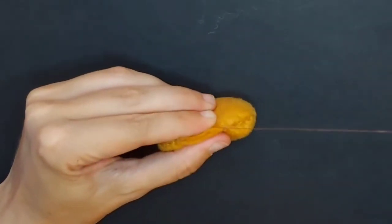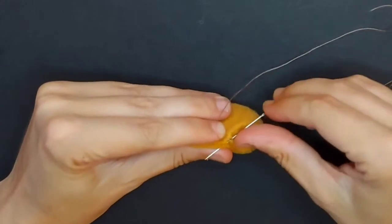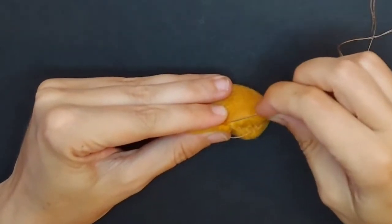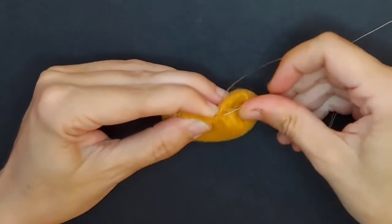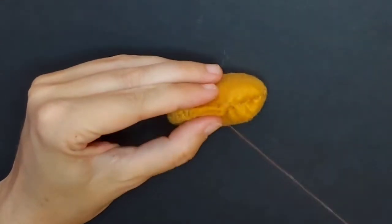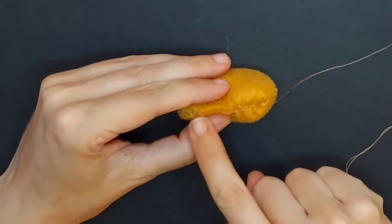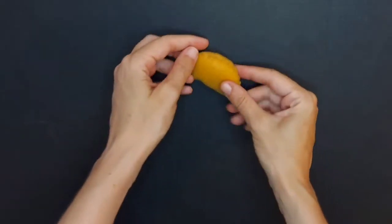I just did a zipper stitch to close this, which is just a straight stitch on alternating sides, and then you can pull it tight to close it. Yeah, finish closing that up, and that is a nugget.